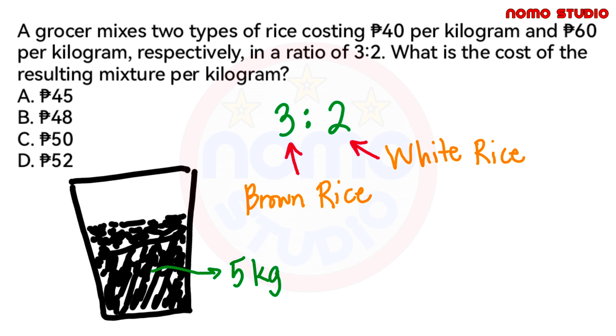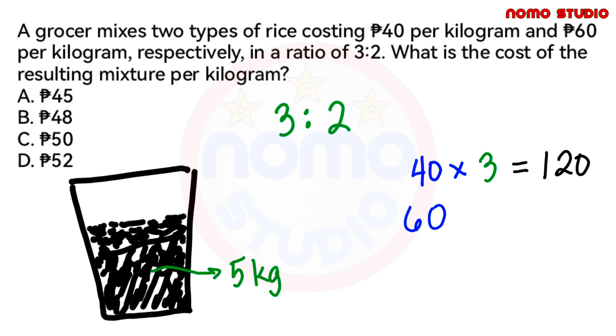So ang next step natin is i-multiply lang natin itong 40 pesos per kilogram of our first type of rice by 3 kilograms. And at the same time, i-multiply din natin itong 60 pesos per kilogram of our second type of rice by 2 kilograms. So 40 times 3, this gives us 120. Ibig sabihin nito, 120 pesos ang cost of 3 kilograms of brown rice. And 60 times 2, this is also 120 pesos. At ito yung cost of 2 kilograms of white rice.